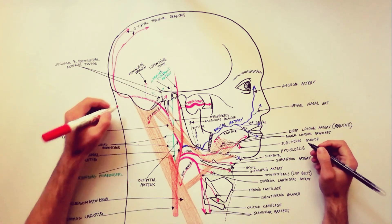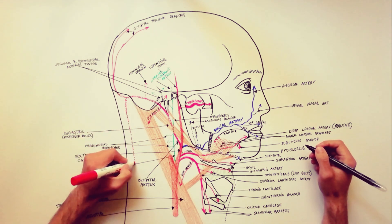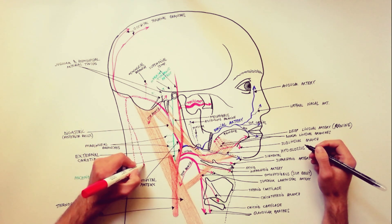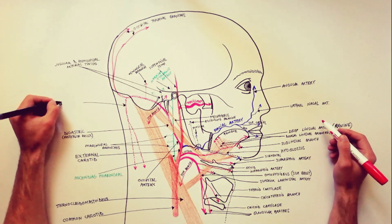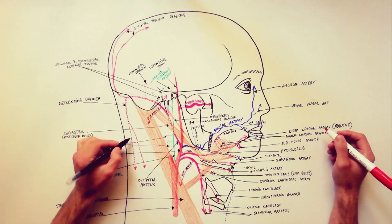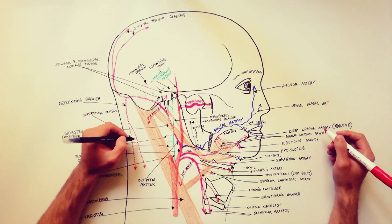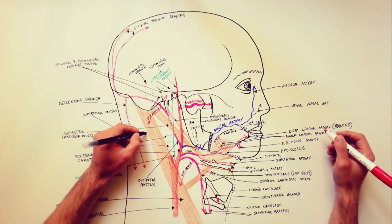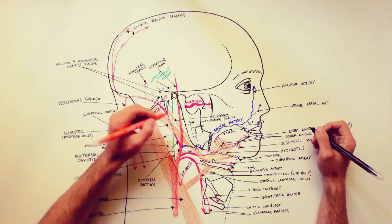Lastly, from the occipital artery we have a descending branch, which is the largest branch. This branch divides into a superficial and a deep portion. The superficial portion supplies the trapezius, while the deep portion anastomoses with the vertebral artery and with the deep cervical artery.